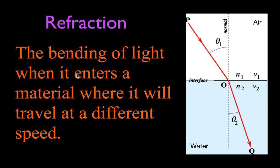What is refraction? Refraction is simply the bending of light when it enters a material where it travels at a different speed. Here we have air and here we have water. Light is going to be traveling slower through the water because it's more dense — optically dense. So when that light ray crosses that boundary, it's going to be bent. In this case, it bends towards the normal line. Water has a different index of refraction than air: for air it's about 1, for water it's about 1.33.